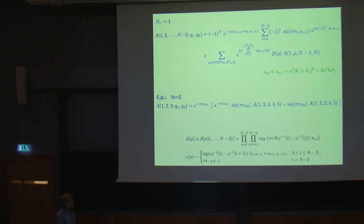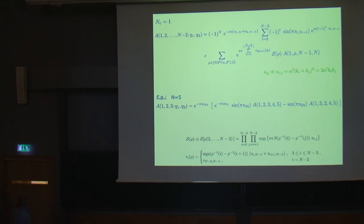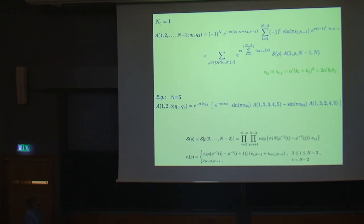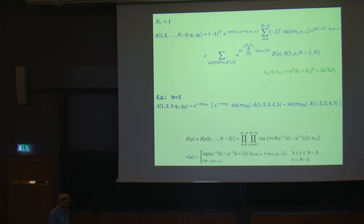For the case of three open strings and one closed string, this is what we get from the formula. Importantly, this is actually a complex amplitude because we have a graviton which is left-right symmetric, but we integrate only over the upper half plane. Since we have different left and right momenta, you should not expect a real result.